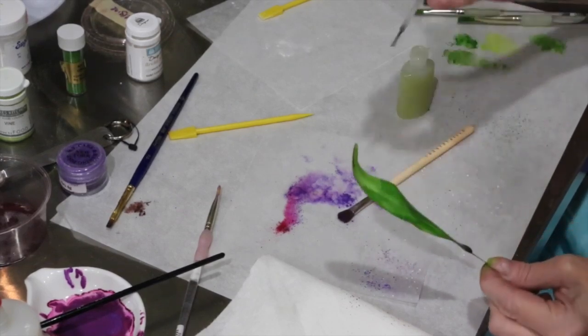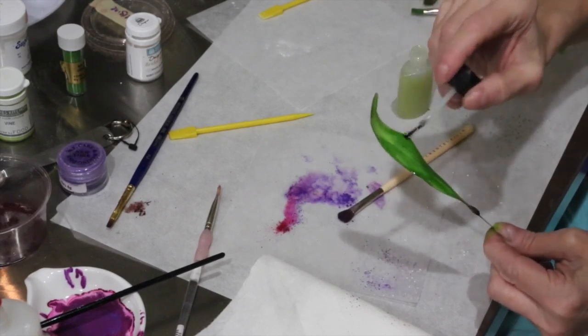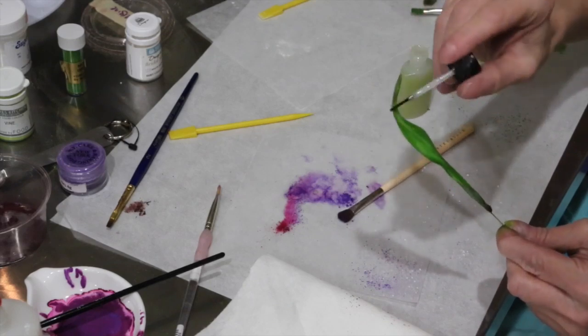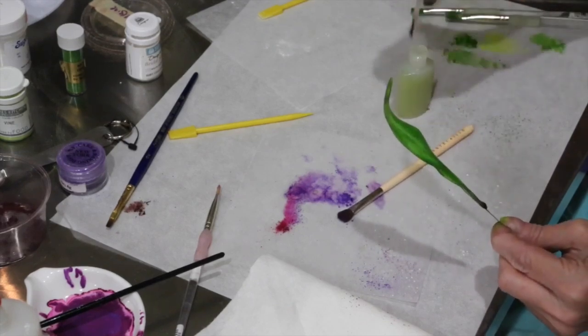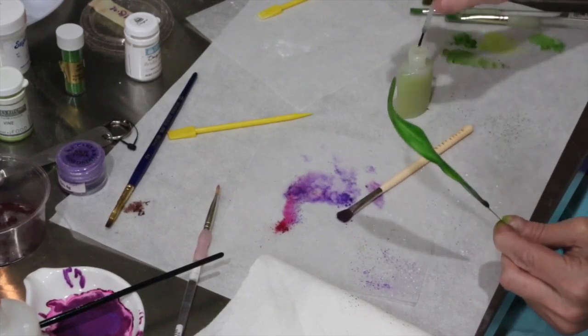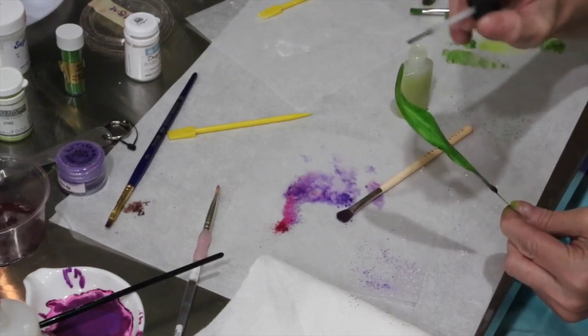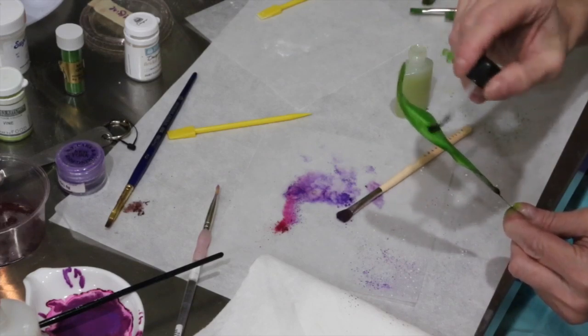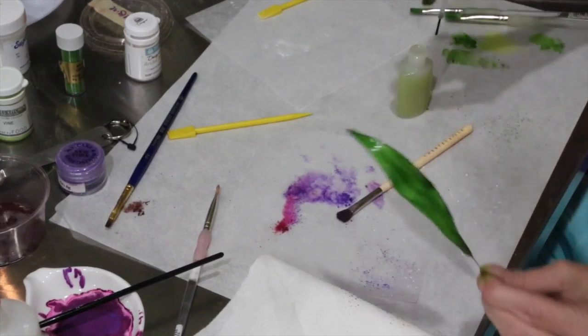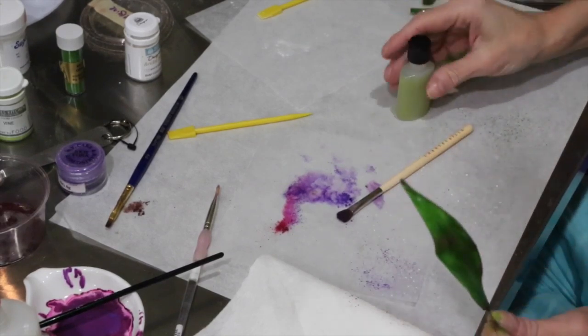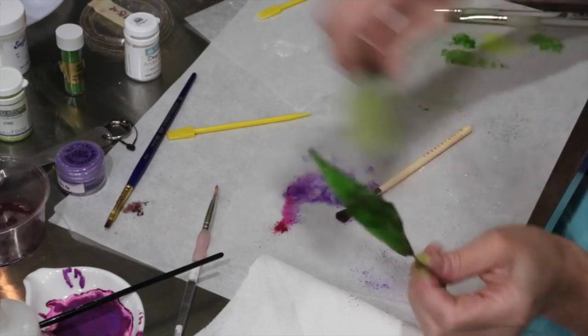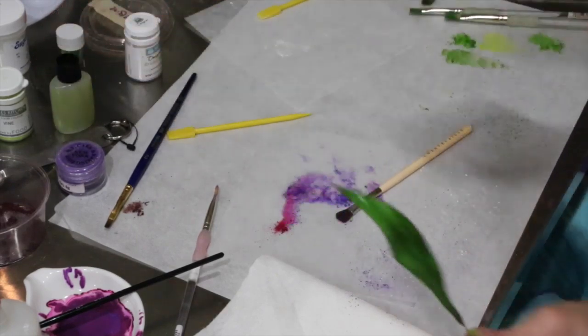But as far as confectioner glaze goes, it is completely edible. I'm not sure very many people are going to be eating these sugar flowers. First of all, they're too beautiful. Second of all, there's a wire in there. They're harder than royal icing once it dries. But they are edible. If somebody wants to eat them, at that point, just put it in a floral styrofoam, or styrene foam, and let it dry.